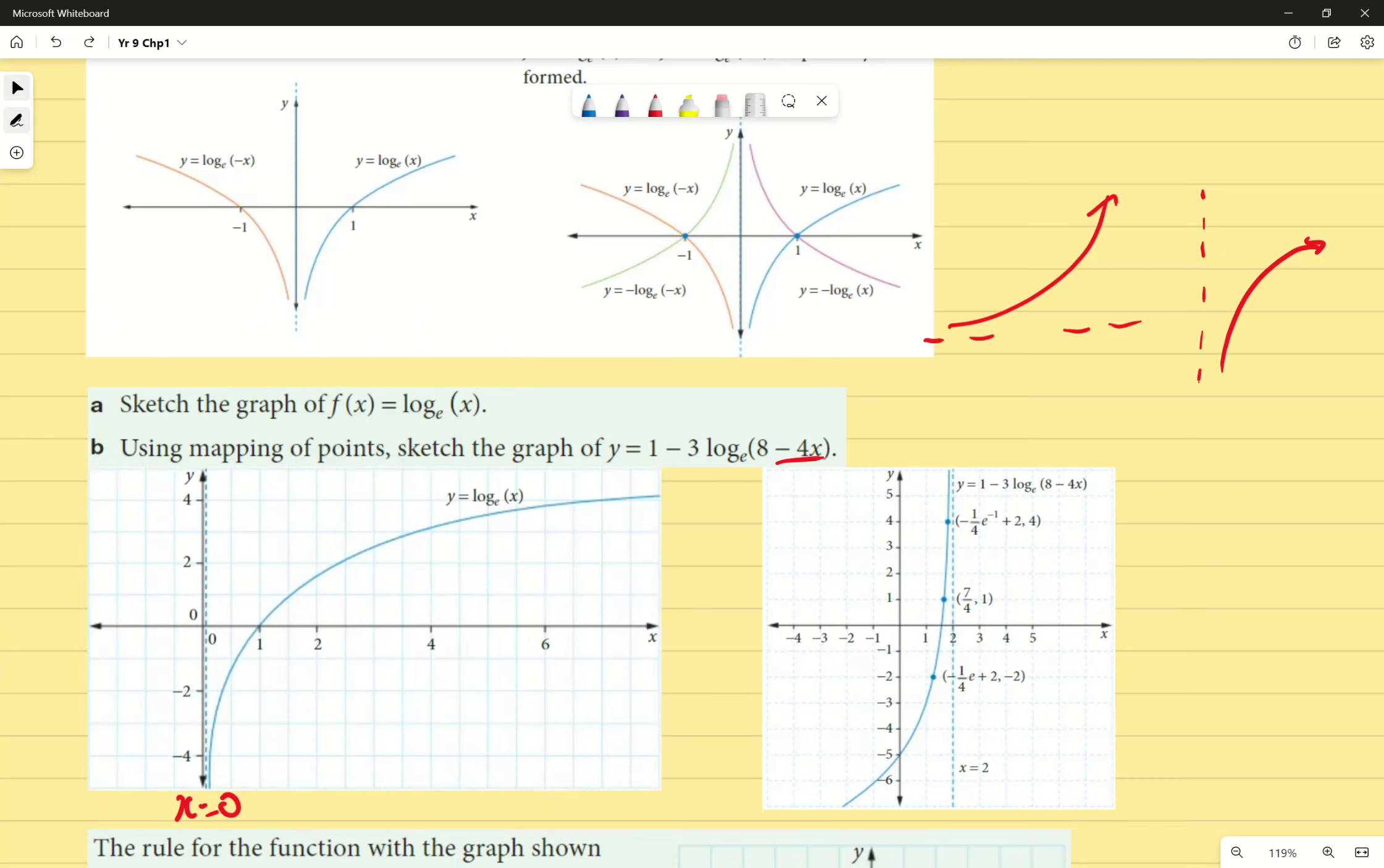And then, because this would be the same as y equals 1 minus 3 log base e, I'm just writing that as ln, our natural logarithm, ln of negative 4 bracket x minus 2. We're going to be shifting 2 units to the right, and then the following transformations would also apply as well.